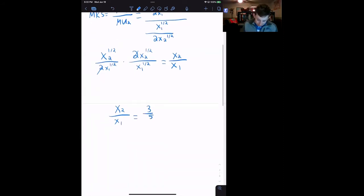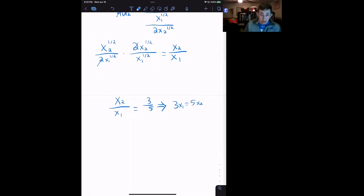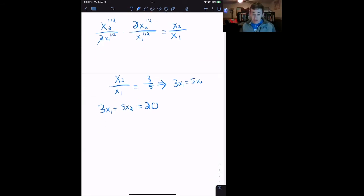Go ahead and simplify this. This implies that 3X1 equals 5X2. Let's use that in the budget constraint. Remember, our budget constraint is 3X1 plus 5X2. We're going to say that equals 20, because we want to spend all our money. We like both items, so we want to spend it all.